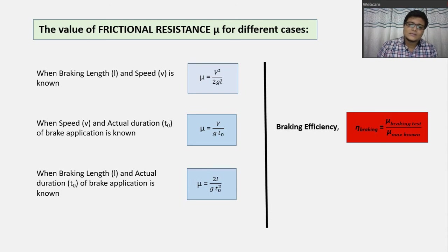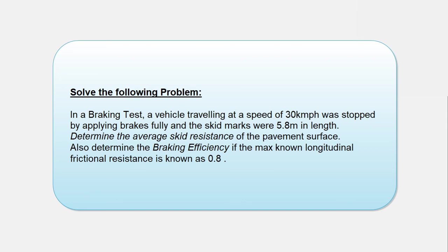Now, solve the following problem using the formulas which are already provided. Remember that in this problem the speed is given in kilometers per hour, but while putting the value in the formula, you have to convert it into meters per second. Also note that 'average speed resistance' mentioned here is the same as frictional resistance. Now you should be able to solve the problem.